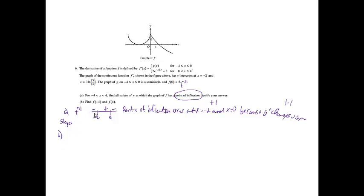We pretty much have two problems going on in one. First, I'd like to find f of negative 4. I'm going to use the top equation because negative 4 is included in that domain. This is expressed as f prime, so to find f I need to take the integral of f prime — in this case f prime is g. I need endpoints: negative 4 is one endpoint, and since f of 0 equals 5, zero is my other endpoint.